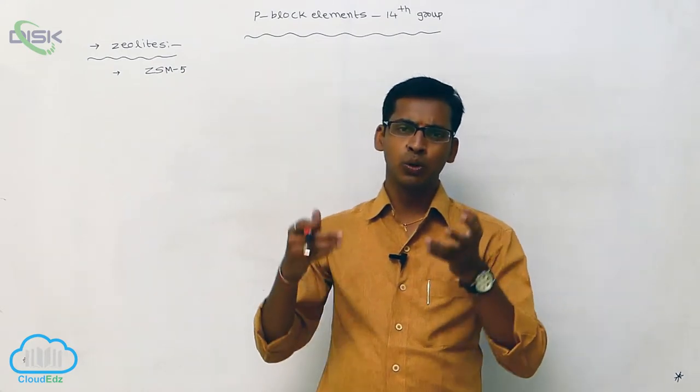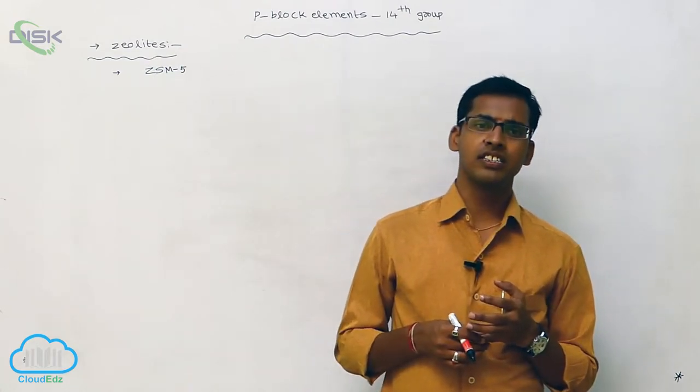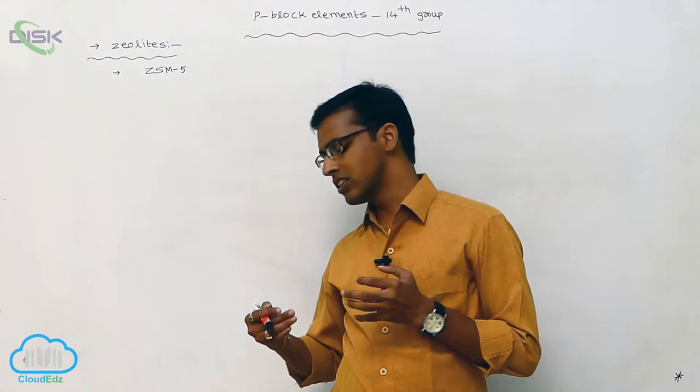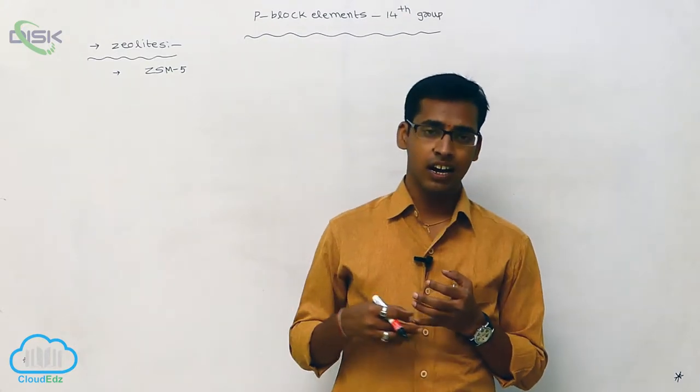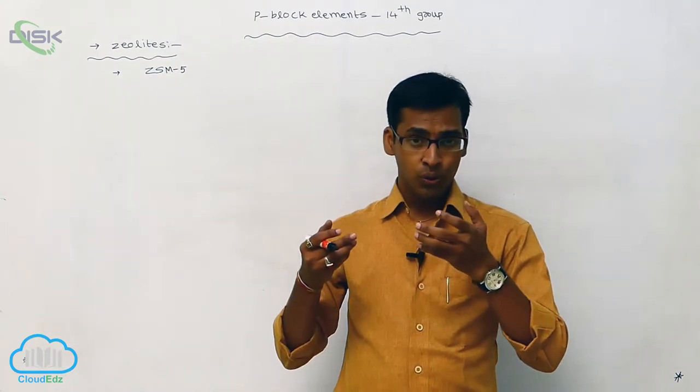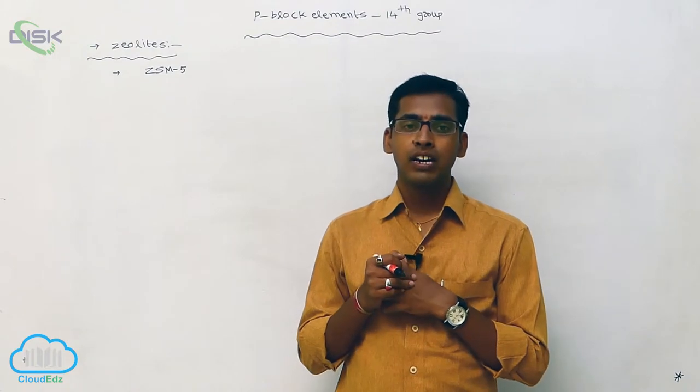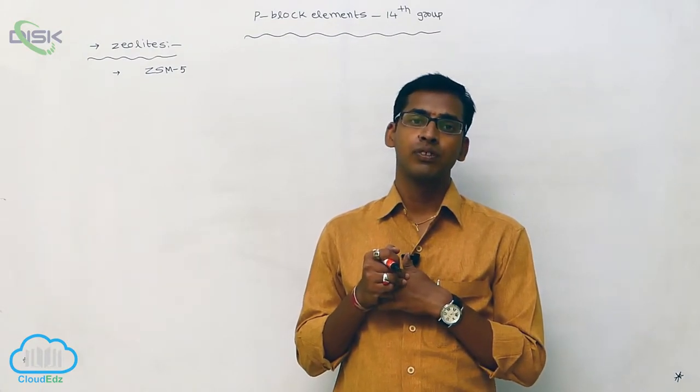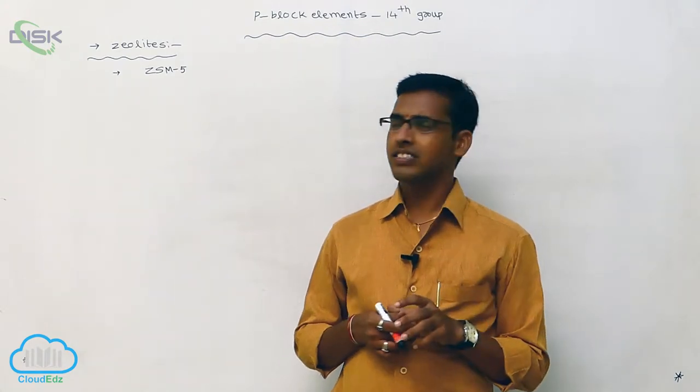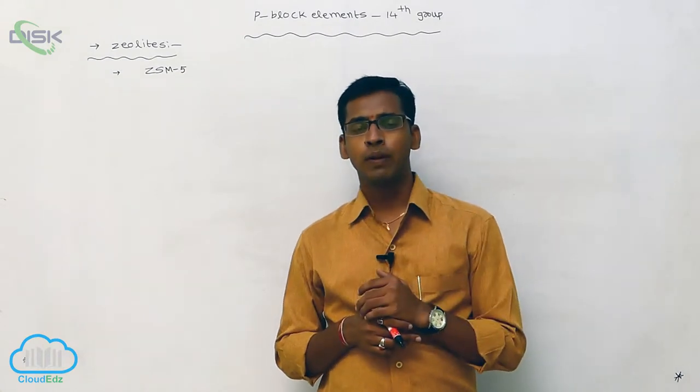Generally, the ionic radii in a group from top to bottom decreases. Atomic radii increases. Electronegativity values from top to bottom again decreases because of the increasing of size or atomic size. Ionization enthalpy values are also decreases from top to bottom because increasing of its size. These are the factors we are discussed in 14th group elements or 13th group elements.